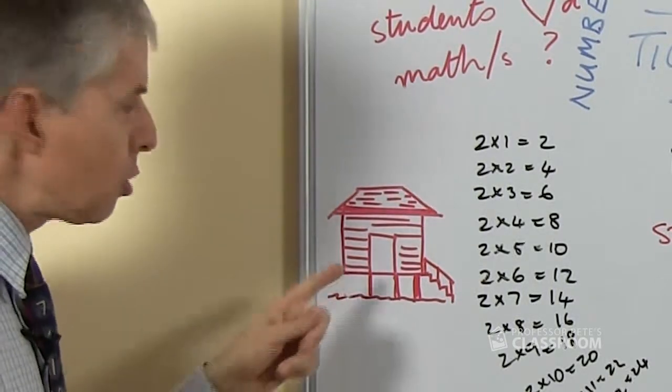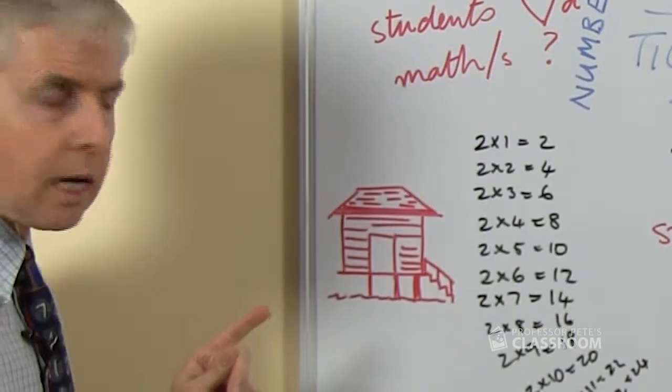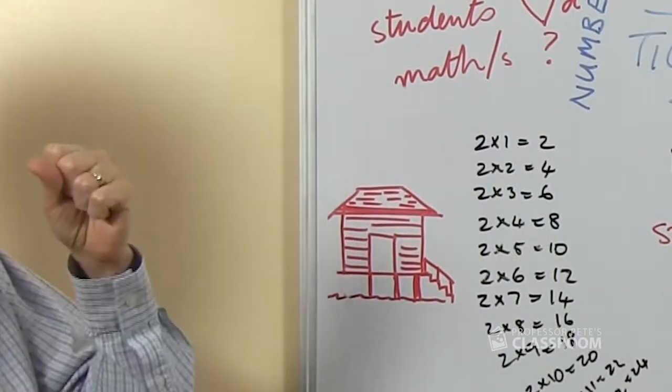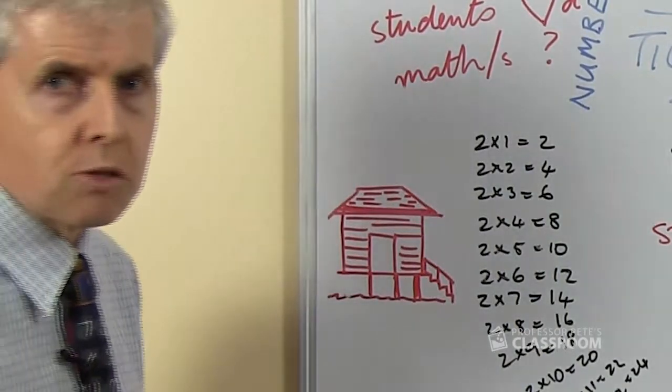But if you took one of the stumps out that corner of the house would be weak and if you put a big heavy bookcase in the corner of the house the floor would sag and clearly it wouldn't be strong enough.